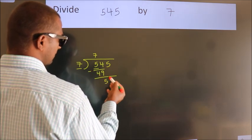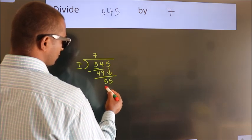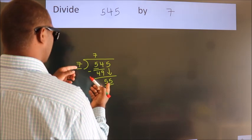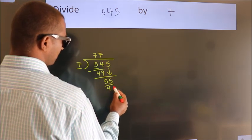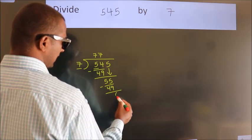After this, bring down the beside number. So, 5 down, giving us 55. A number close to 55 in the 7 table is 7 times 7 equals 49. Now we subtract and get 6.